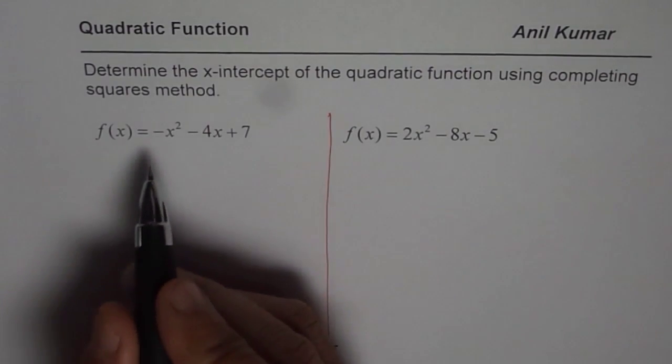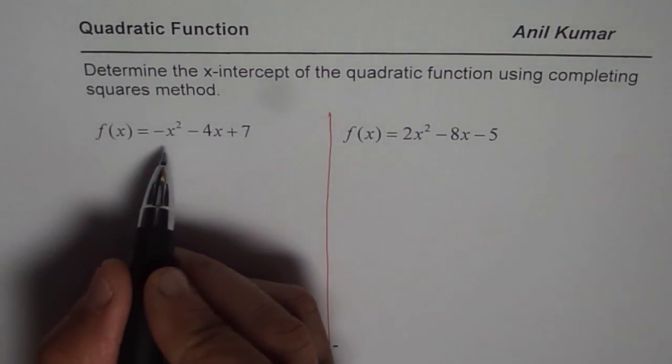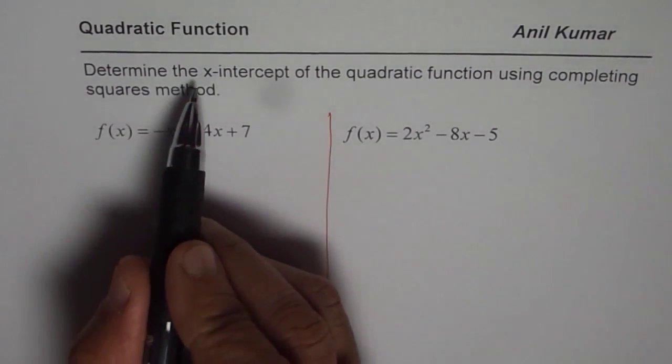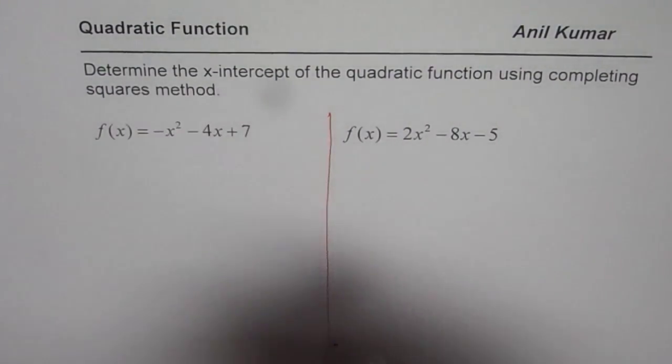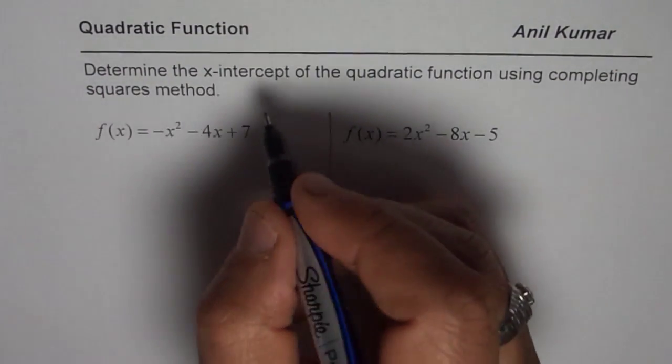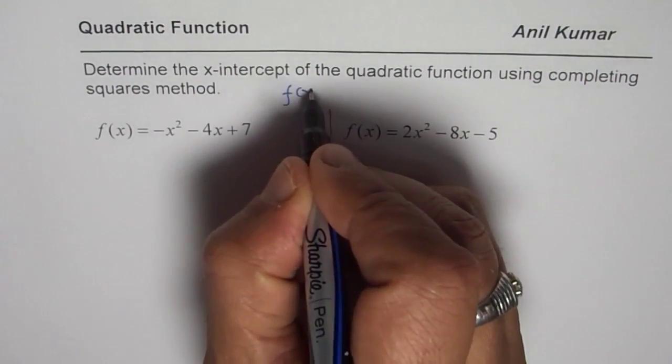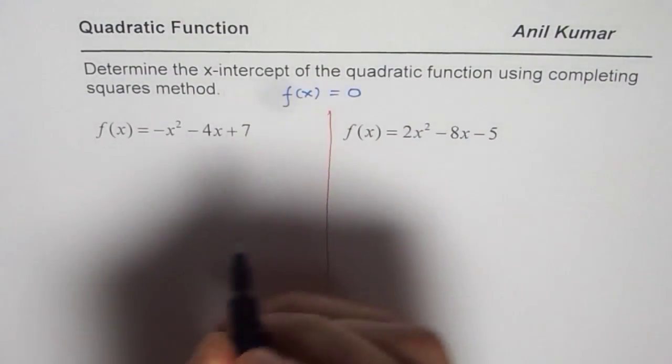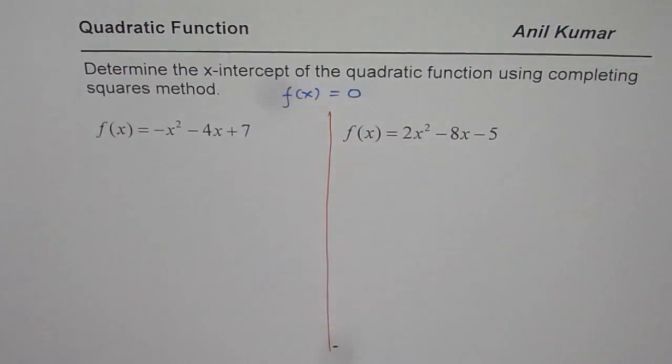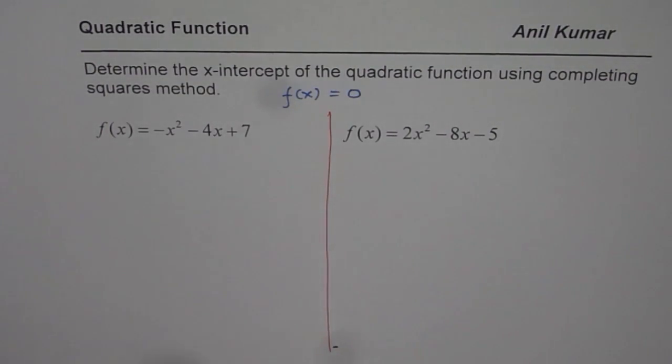So let us begin by completing the squares and then we will find the x-intercept. When we say x-intercept, what does it mean? x-intercept really mean that at x-intercept, f(x) is equal to 0. So we will substitute 0 for f(x) and then solve for x.